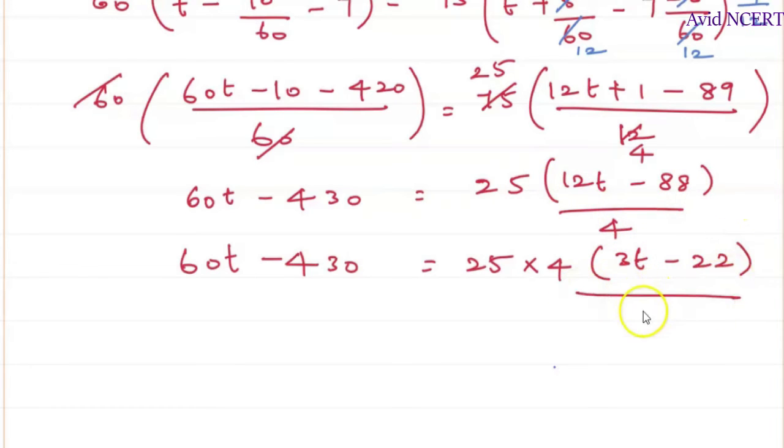22 times is 88 divided by this 4, which is 4, 4 get cancelled. Therefore, 60t minus 430 equals 25 times 3 is 75t minus 22 times 25 is 550.